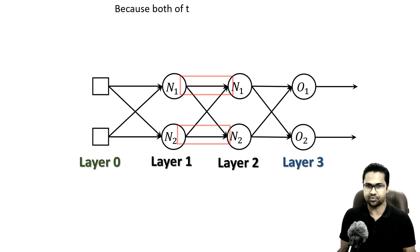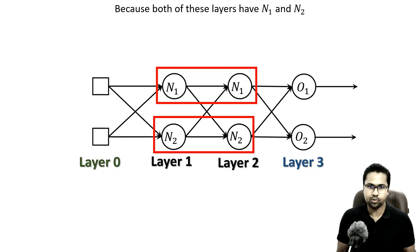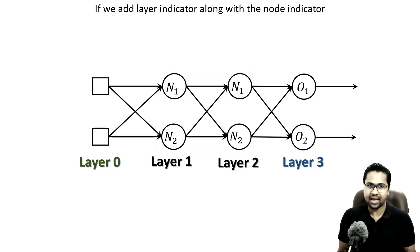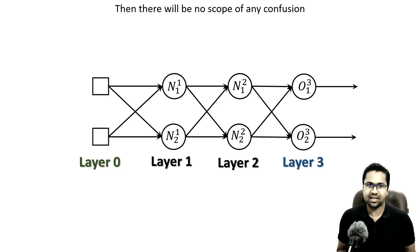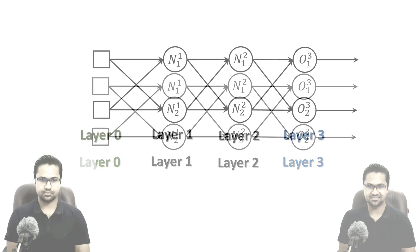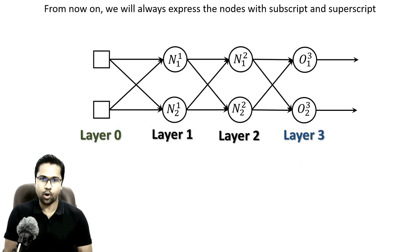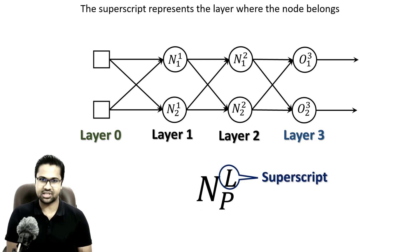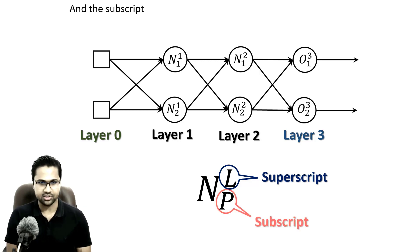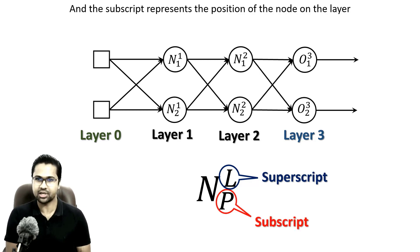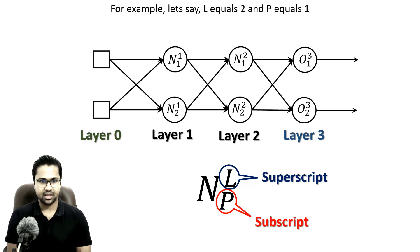But there are still chances of confusion. Because both of these layers have N1 and N2. If we add layer indicator along with the node indicator, then there will be no scope of any confusion. From now on, we will always express the nodes with subscript and superscript. The superscript represents the layer where the node belongs. And the subscript represents the position of the node on the layer.